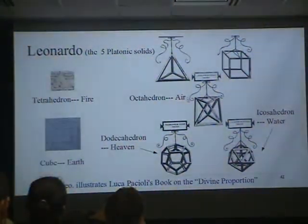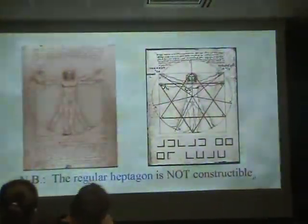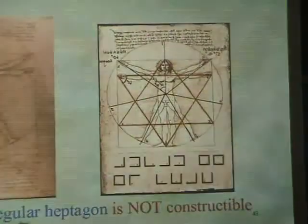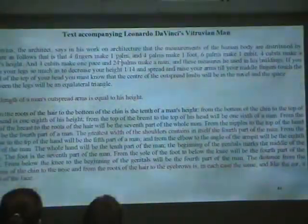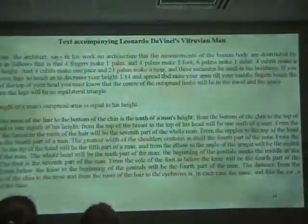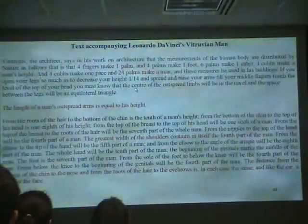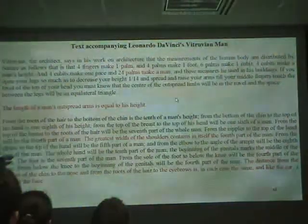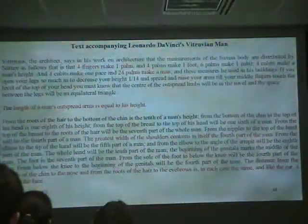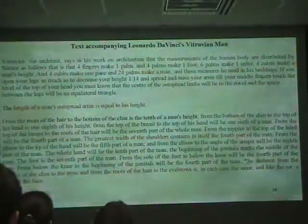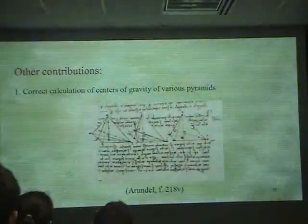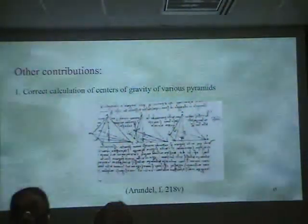We have various platonic solids with various interpretations. And you have the Vitruvian Man. This is actually stuff that he got from other people — this is not Leonardo's original thing. This is really from Vitruvius' lost treatise on the human being, and the fact that there are mathematical proportions associated to these. For example, four fingers make one palm, twenty-four palms make a man. The length of a man's outspread arms is equal to his height — that's why he's always shown this way. The breadth of the shoulders is a fourth part of a man. So there are all these mathematical interpretations. Here's a correct calculation of the center of gravity at various junctures — that's an engineering feat.